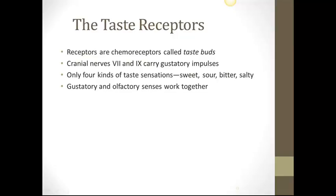The taste receptors — another name for taste cell receptors are chemoreceptors, also called gustatory cells or taste buds. The papillae of the tongue contain the taste buds, and most taste buds are located in the back of the tongue. The seventh and ninth cranial nerves carry the gustatory impulses. There are only four kinds of taste sensations: sweet, sour, bitter, and salty. The gustatory and olfactory senses work together in our taste.